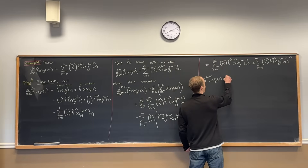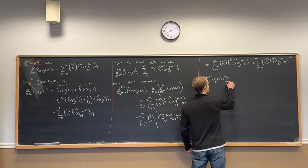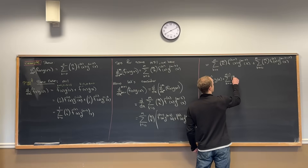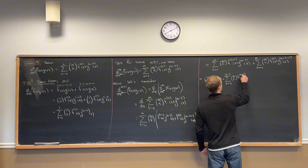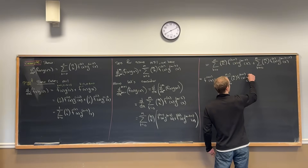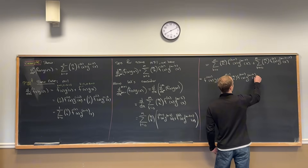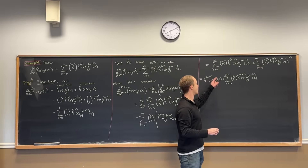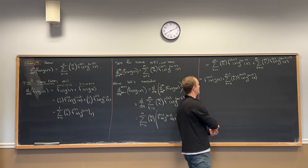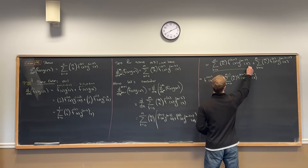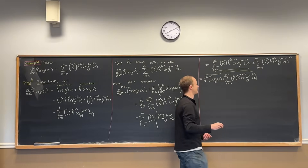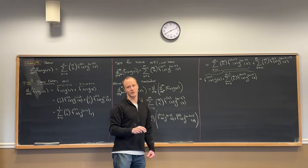Then we're left with the sum as k goes from 0 to m minus 1 of m choose k, times the (k+1)st derivative of f, times the (m minus k)th derivative of g. I just changed the ending point — I took the top term off and wrote the rest.